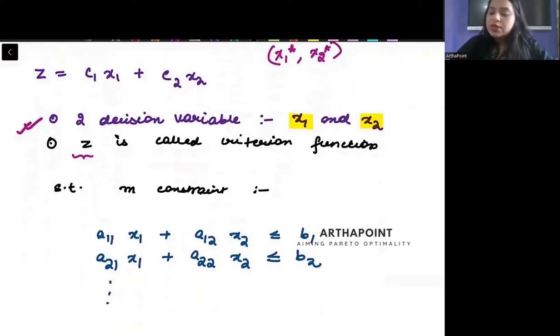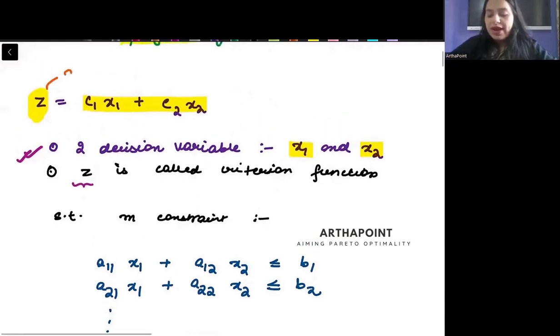So linear programming as a graphical approach is very, very important, especially when you have inequality constraints. So this is what it is written, that sometimes we have inequality sign in the constraint function. And in such cases, we will use linear programming. Now just think about this. So here what I have done is I have written a function z.